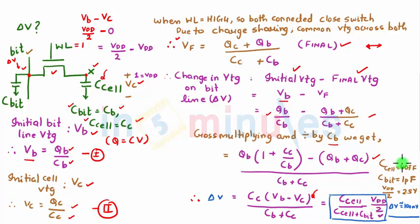And if we put some standard values of C cell which is 40 femtofarads and C bit as 1 picofarad and VDD by 2 as 2.5, presuming our VDD is 5 volts, we get our delta V is nothing but 100 millivolts. So we have to detect this small difference of 100 millivolts to the sense amplifier.